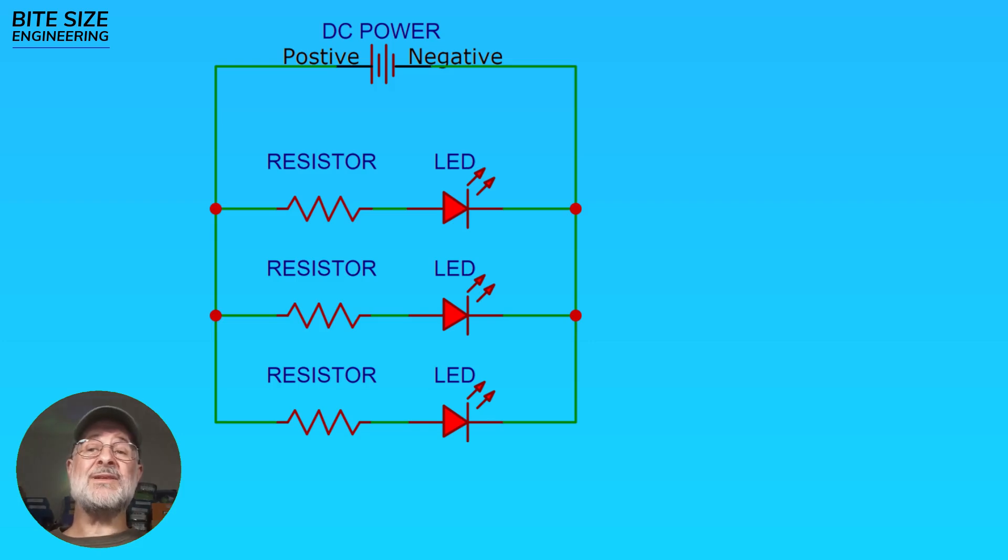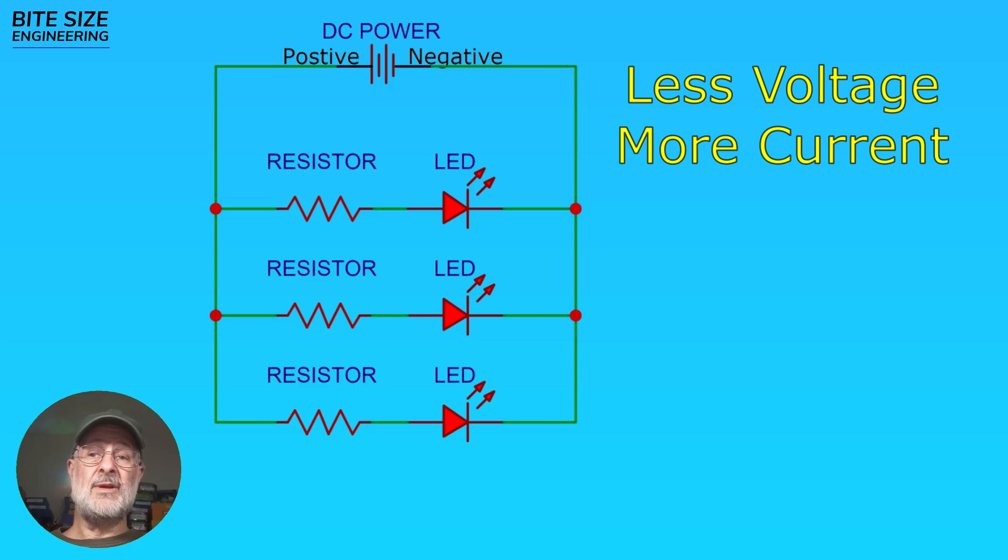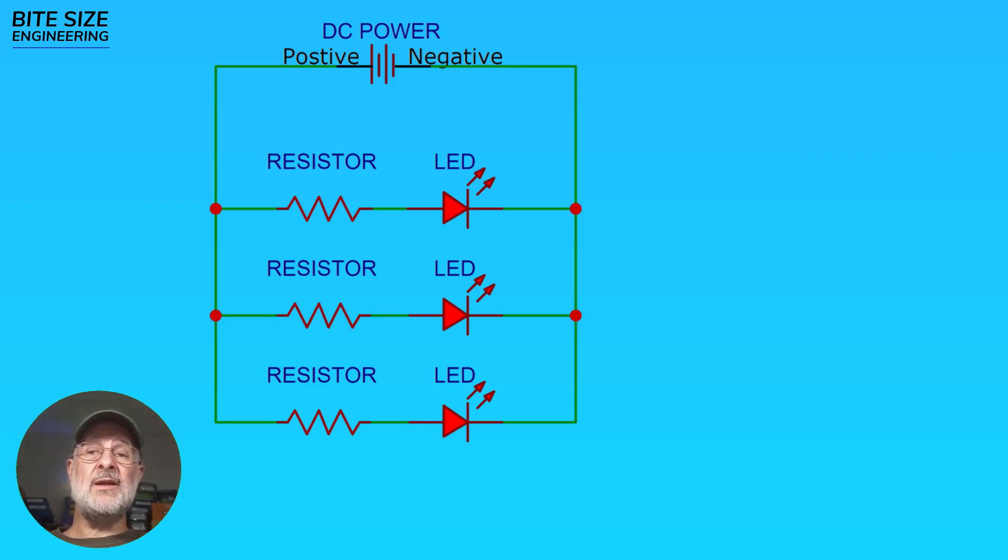Parallel requires less voltage but more current. And if one of the LEDs goes out, the rest of them remain lit.